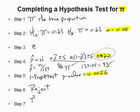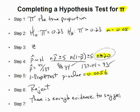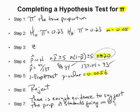So here, this last step would be to state your conclusion in English, and in English I'd simply say there is enough evidence to suggest the proportion of students going on to a four-year school or college is increasing.